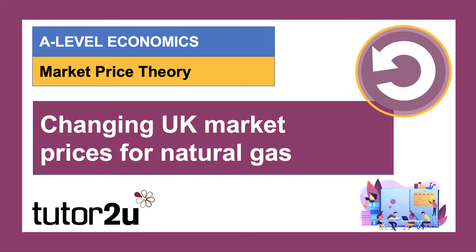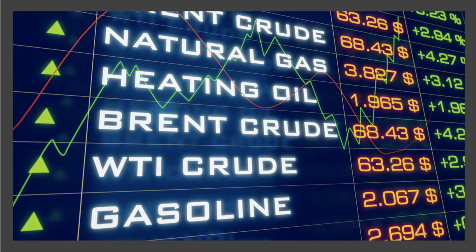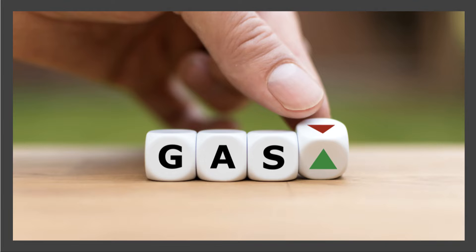Welcome to this micro video. We're going to spend a few minutes looking at some of the demand and supply side factors that can cause volatility in the market for natural gas. In the UK, prices for natural gas have been highly volatile in recent weeks and months. Natural gas is a highly traded commodity and about half the gas consumed by UK households and businesses comes from the North Sea, in particular from Norway, via two interconnectors from continental Europe, as well as liquefied natural gas (LNG) from the global market.